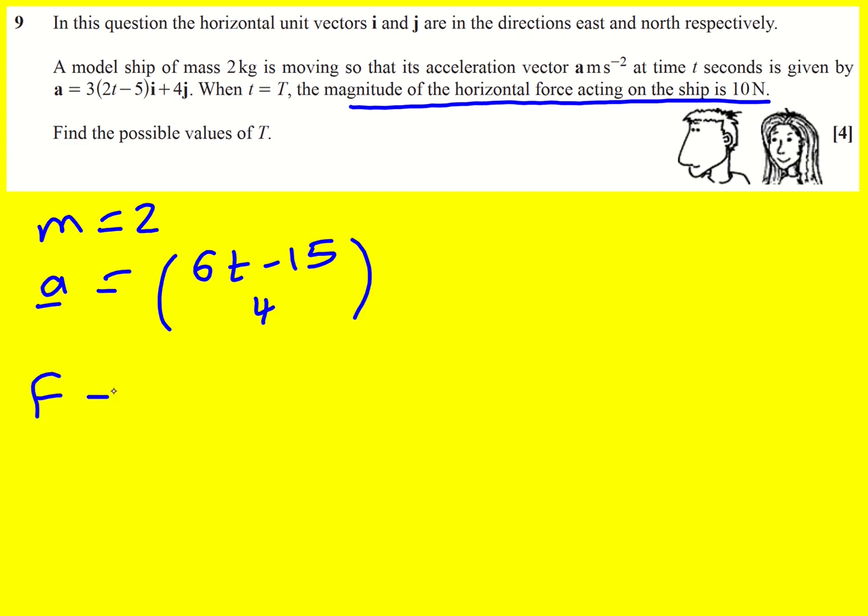Well Newton's second law says that F is equal to ma and we can write it in vector form like this, and it follows that the magnitude of F is going to equal m times the magnitude of a. Now we're told the magnitude of F, we're told the horizontal force acting on the ship is 10 Newtons, and we're told that m is 2.